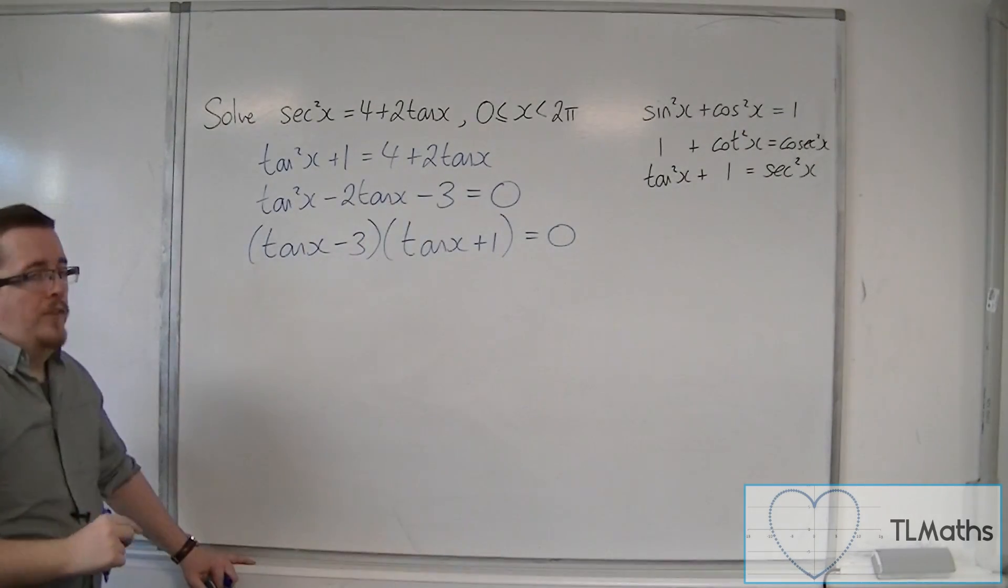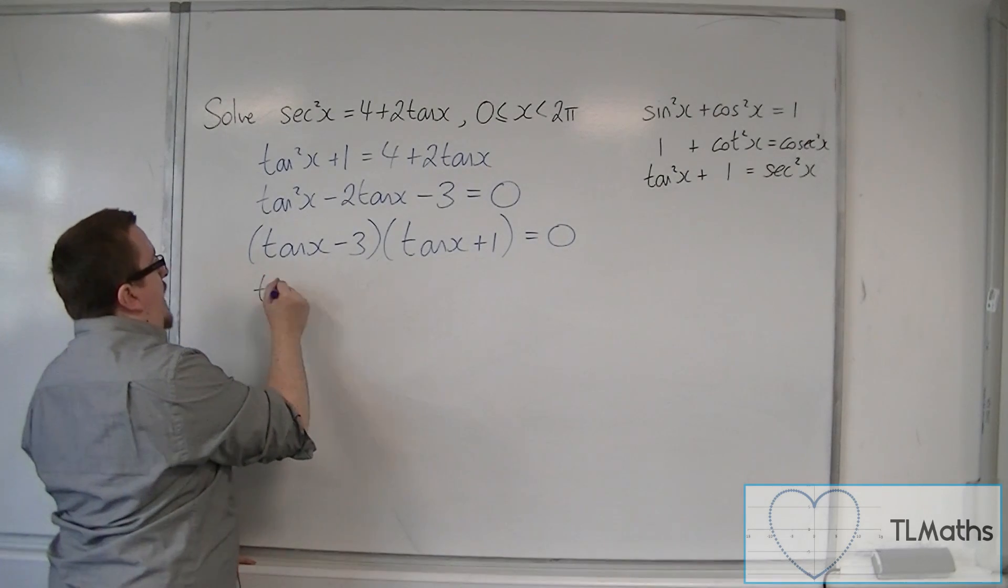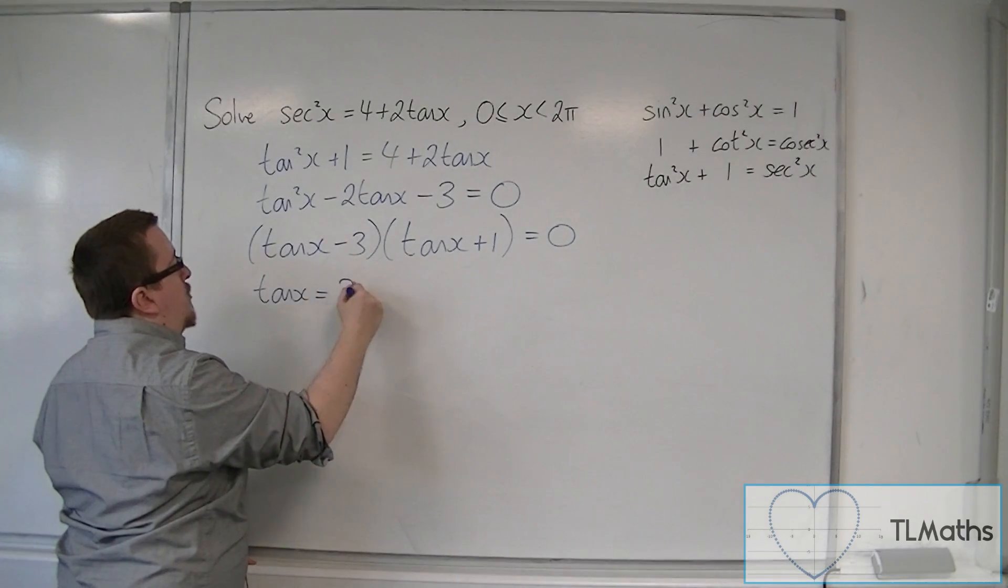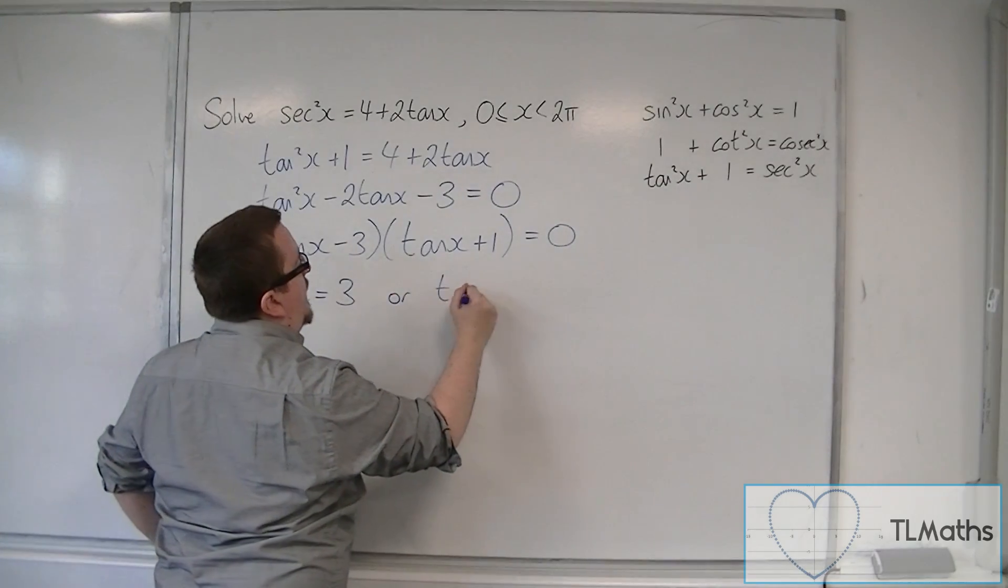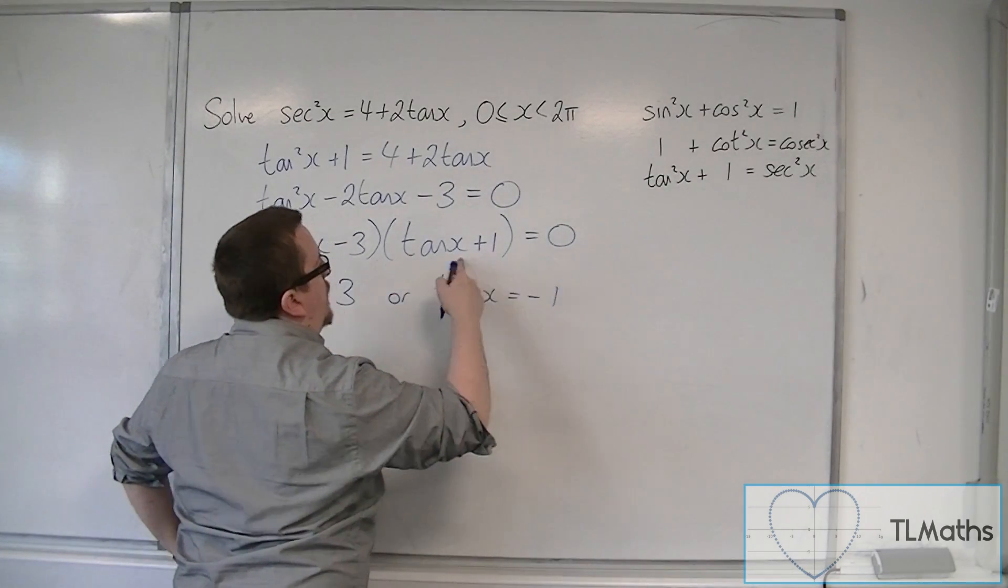So either tan x is equal to 3 from this bracket, or tan x is equal to minus 1 from this bracket.